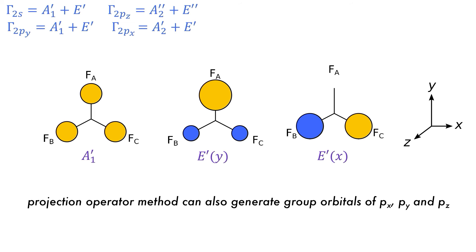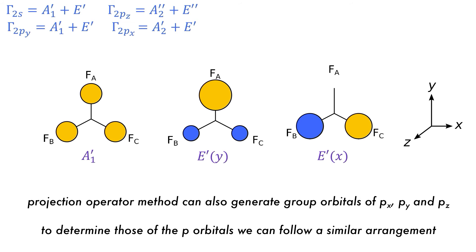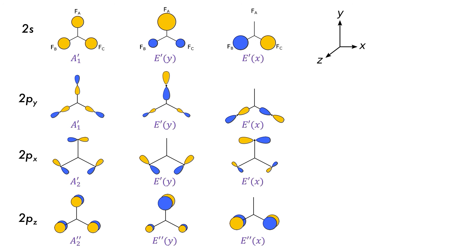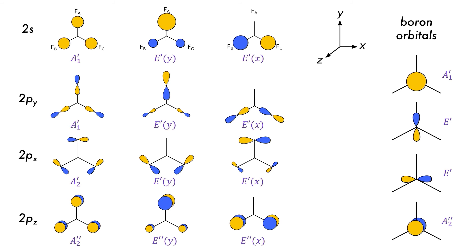The projection operator method can also be used to generate the group orbitals of Px, Py, and Pz. The results will be similar to what we got for the 2S, so we can use our knowledge of the 2S orbitals to help us form the 2P orbitals too. The 2P orbitals follow the same pattern as the 2S orbitals and can be done through the same rigorous method. The symmetry of the central boron atomic orbitals needs to be known so that the energetically and symmetry appropriate molecular orbitals can be formed.